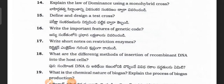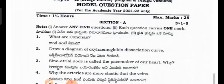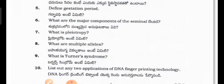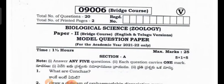That's the botany model question paper. Next let's look at the zoology question paper. Biological science zoology paper model question paper — Section A: What is capillary? Draw a diagram of the oxyhemoglobin dissociation curve. The sinoatrial node is called the pacemaker of our heart — why? Why are arteries more elastic than veins? What is pleiotropy? What are multiple alleles? What is Turner syndrome? List two applications of DNA fingerprinting technology.